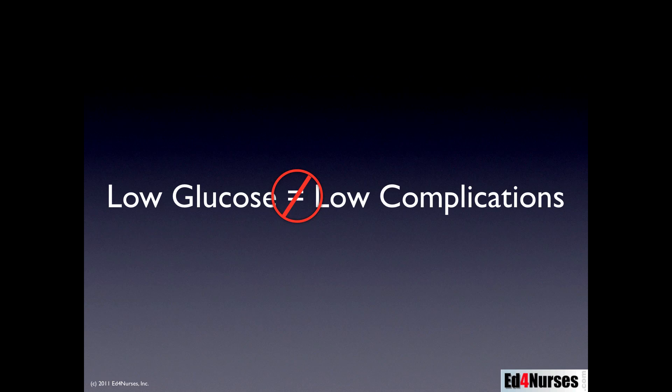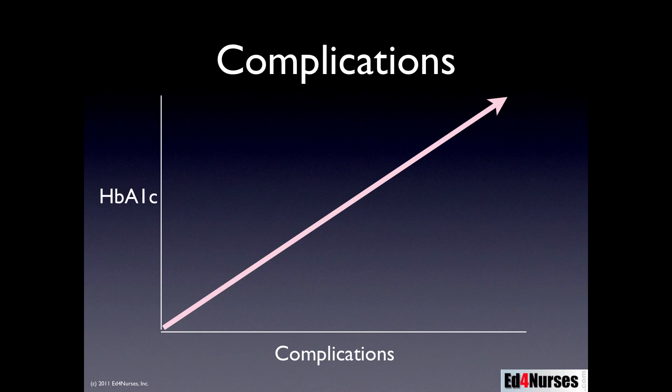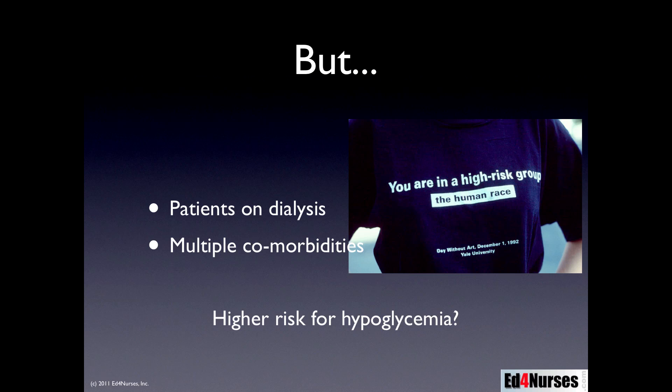Long-term complications of blood glucose tend to be directly and linearly related to the hemoglobin A1C. There is a linear relationship between our hemoglobin A1C concentration and the number of long-term complications associated with diabetes. So certainly we want to have the lowest hemoglobin A1C level possible — but in some patients, like those on dialysis or with multiple comorbidities, we run into problems.